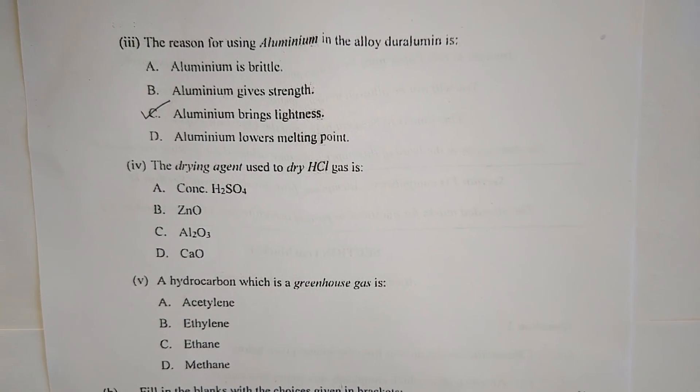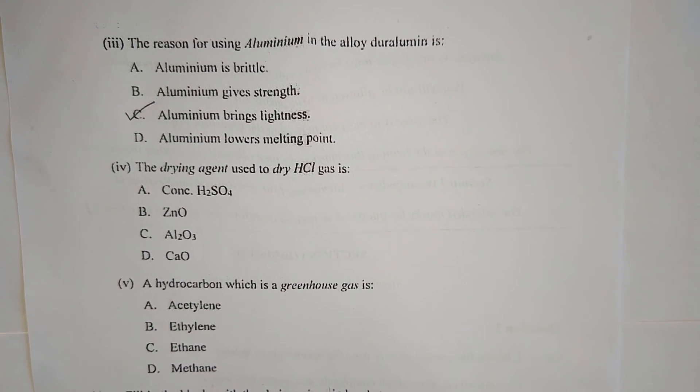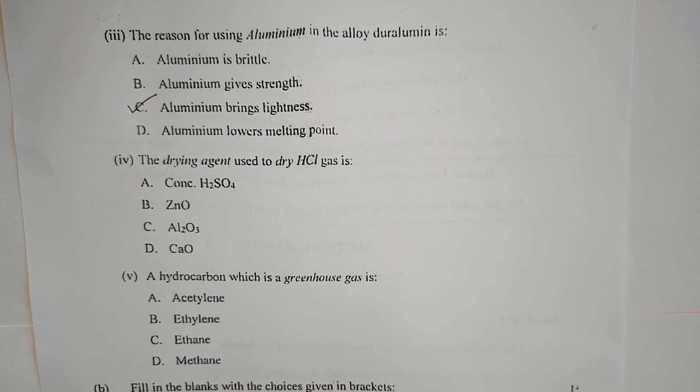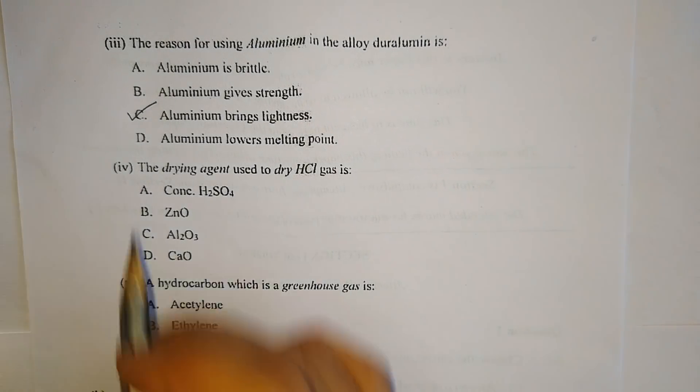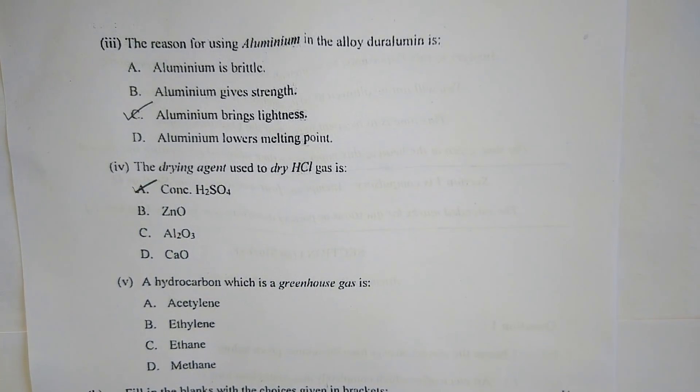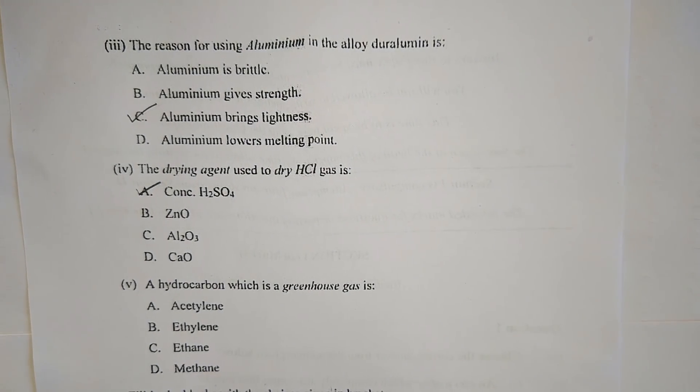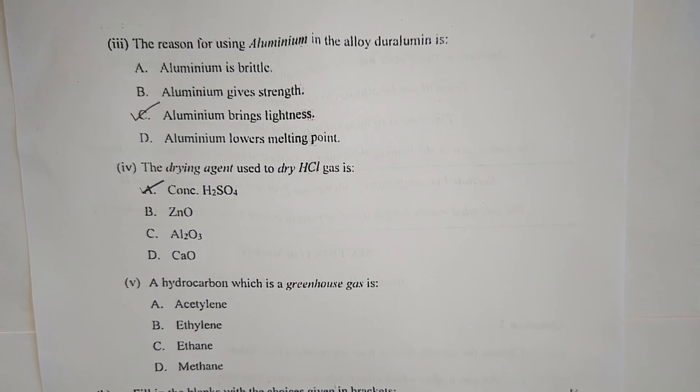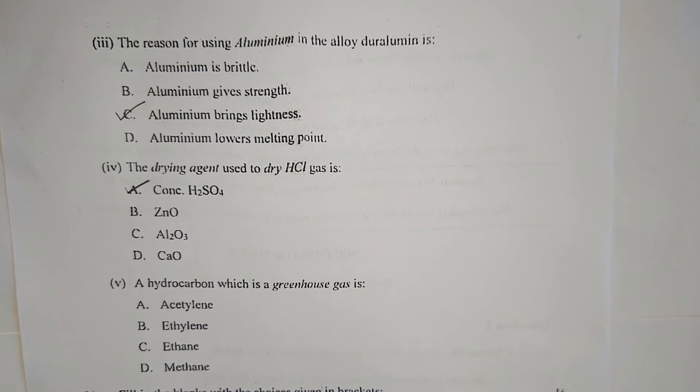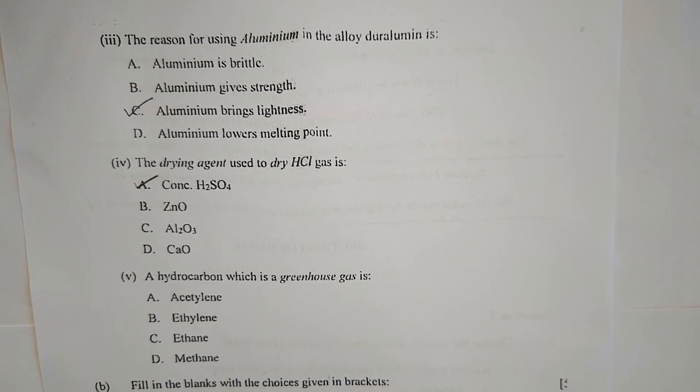Number four: The drying agent used to dry concentrated sulfuric acid is A. concentrated sulfuric acid, B. ZnO, C. Al2O3, or D. CaO. Now the correct answer is A. concentrated H2SO4. Other drying agents such as calcium oxide react with HCl gas, thus our option will be A.